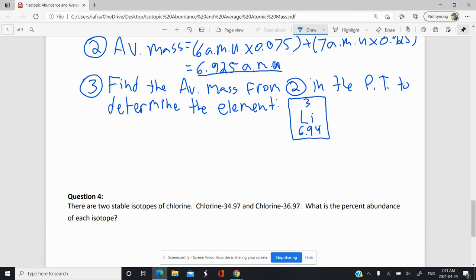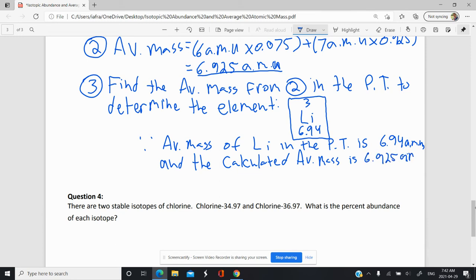So since the average mass of lithium in the periodic table is 6.94 AMU, which is close to the calculated 6.925 AMU, the unknown element is lithium.